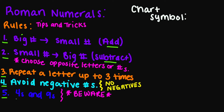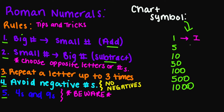Before we get started, let's jot down our chart symbols. I have the numbers one, five, ten, fifty, one hundred, five hundred, and one thousand. The Roman numeral for one is I, for five is V, for ten is X, for fifty is L, for one hundred is C, for five hundred is D, and for one thousand is M.